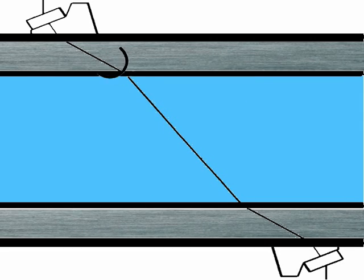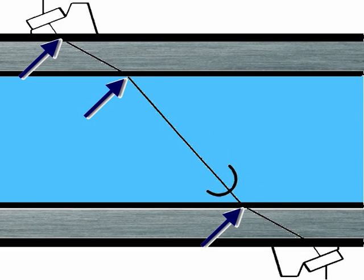For us to get both of these signals across, we have to firstly place the transducers very accurately on either side of the pipe. To do this, the refraction angles of the ultrasonic signal as it passes from one medium to another need to be known.